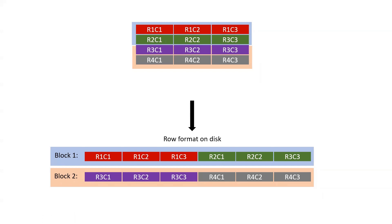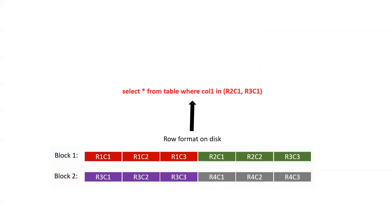But what happens when we read this data? Let's assume you have this data stored in an Avro file and you want to read it now. You have a query like SELECT * FROM table WHERE column one is R2C1 or R3C1. So what we want to do is select all the columns from this table for the entire green row and the entire blue row - these two rows we want to read.